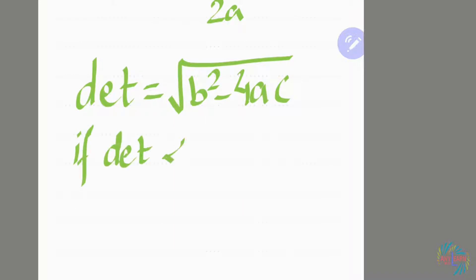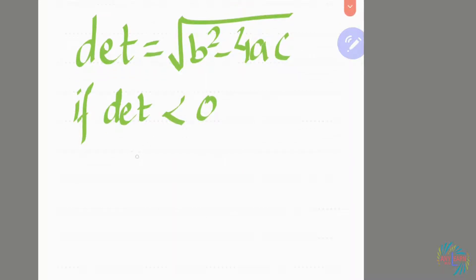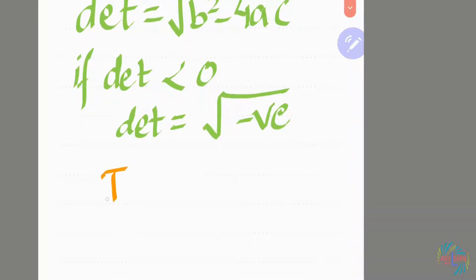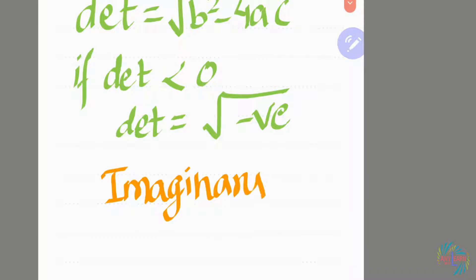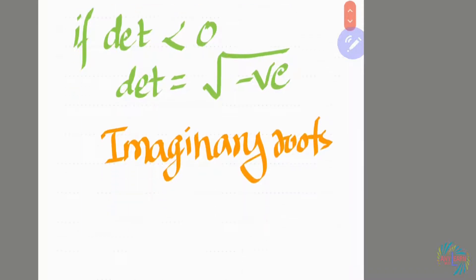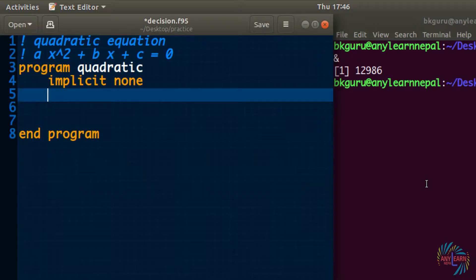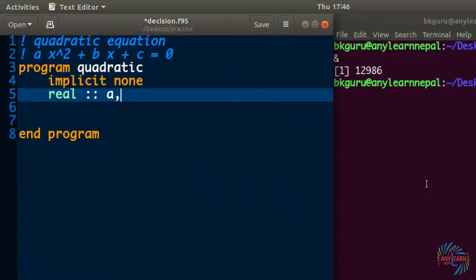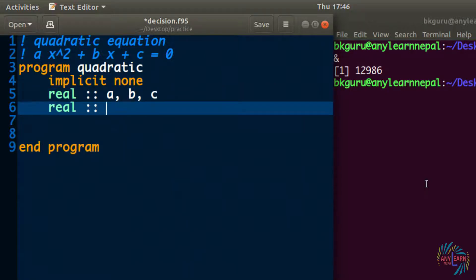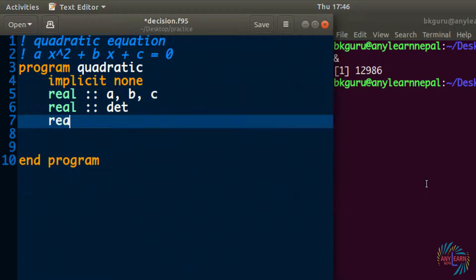We will use a condition: if the determinant is less than zero, there will be a negative value inside the square root, which means imaginary roots. We are not going to solve for imaginary roots. I will declare a, b, c, and the determinant as real variables, and then two answers of x — let them be root1 and root2.